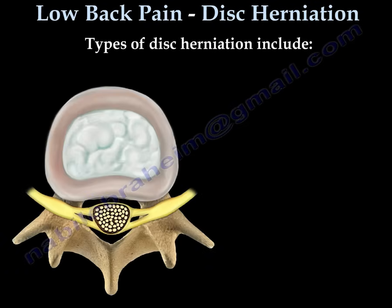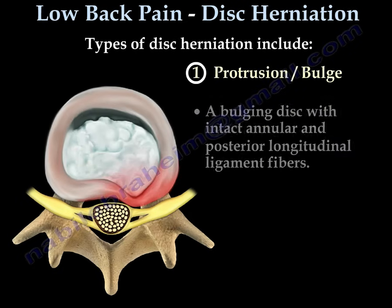There are three types of disc herniation. Number one is a protrusion or a bulge — this is a small bulge of the disc with intact annular and posterior ligaments.